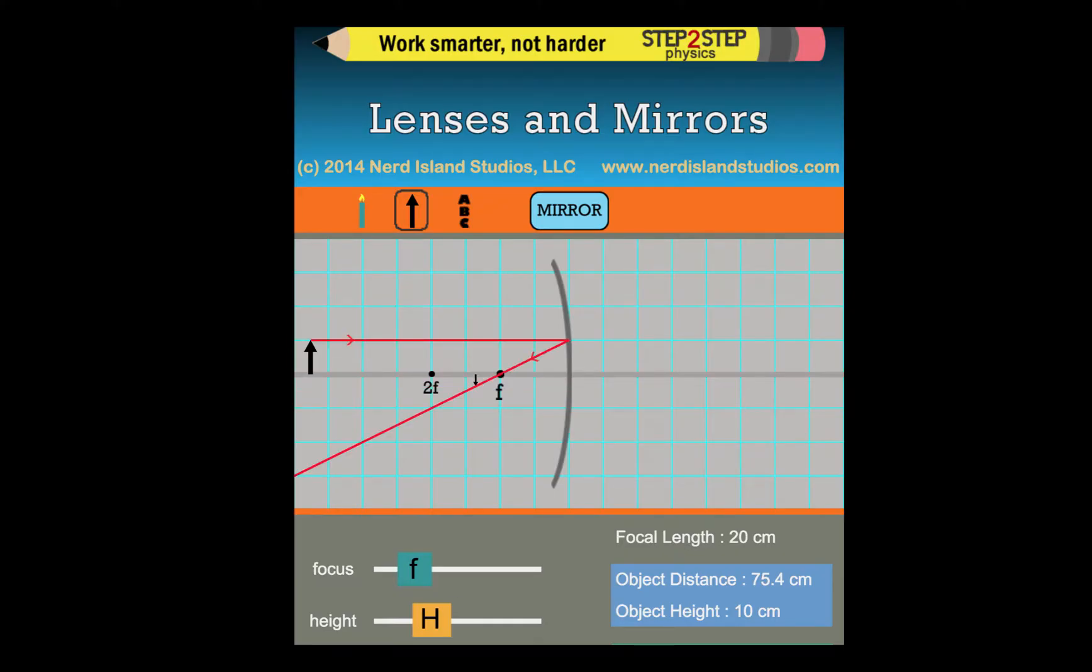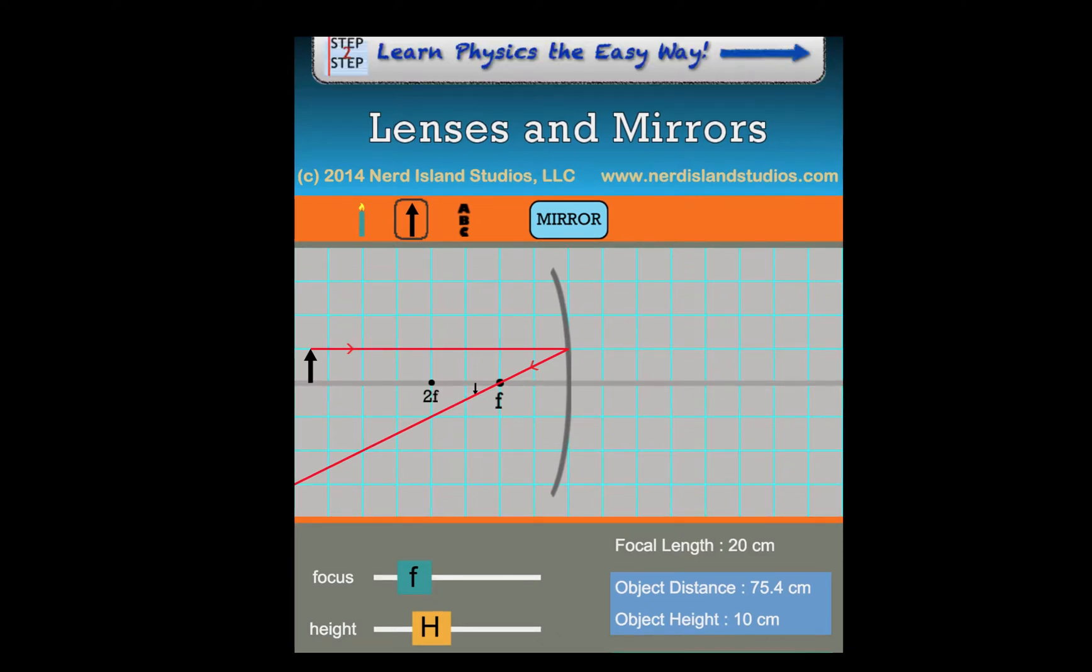So if we start with our object way behind 2F, we start with ray one, parallel to the principal axis through the focal point. Click on ray two. Ray two goes through the focal point until it hits the mirror. Then it comes out parallel. So this little arrow right here is our image.